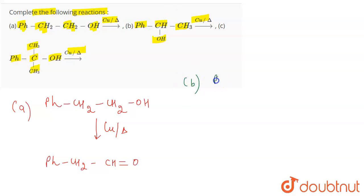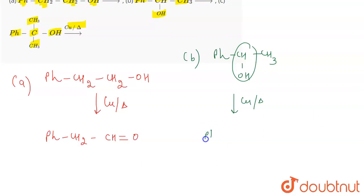If we talk about reaction B, where we have phenyl CHOH-CH3, and when this is heated in the presence of Cu, what is going to happen is a ketone is going to get formed. This one is going to get oxidized, so we are going to get phenyl CO-CH3.